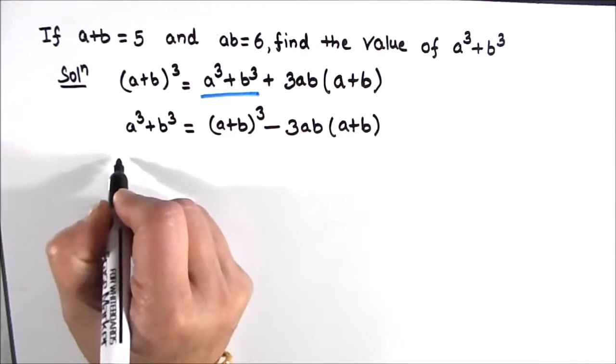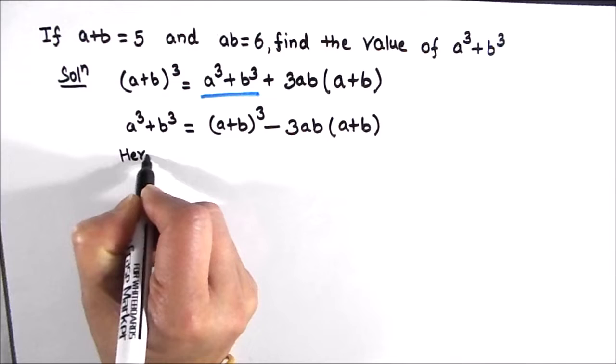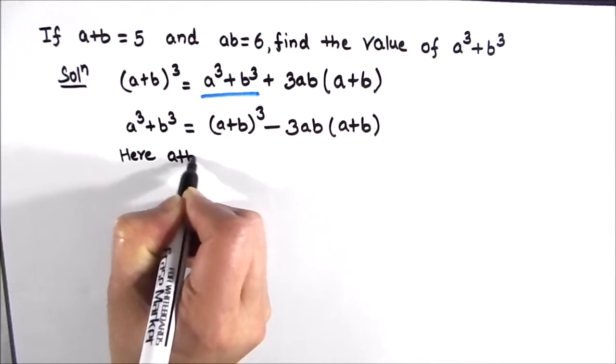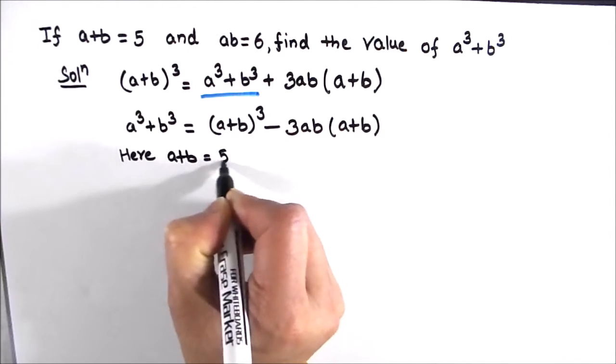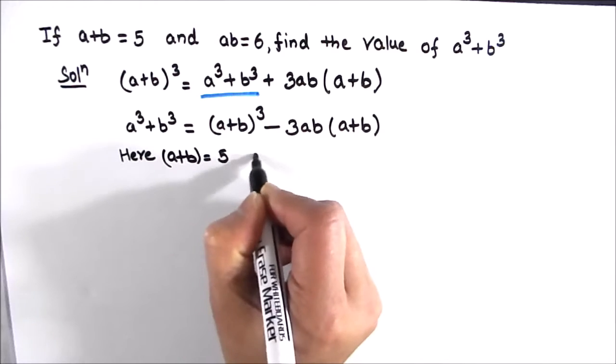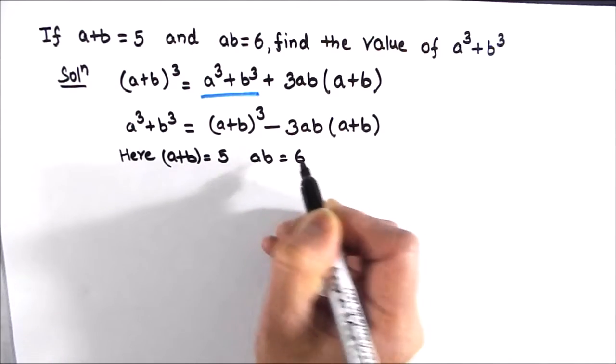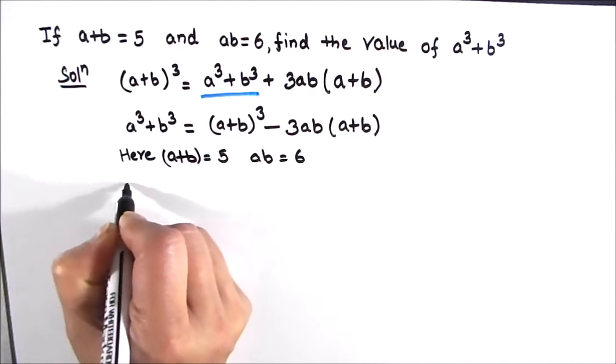Now here we know that a plus b equals 5 and ab equals 6. Substituting the values.